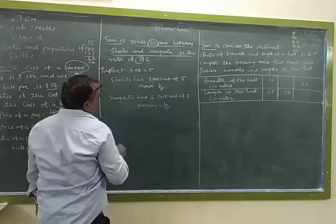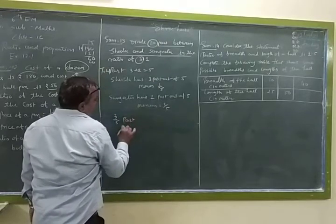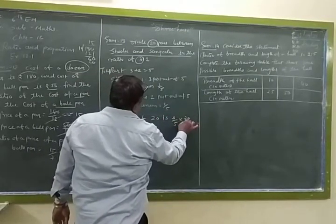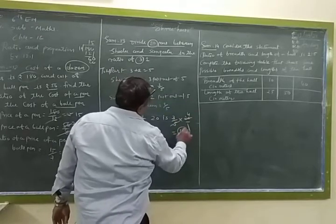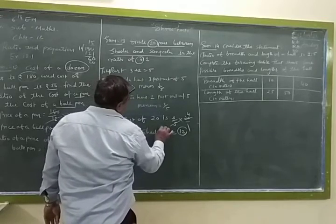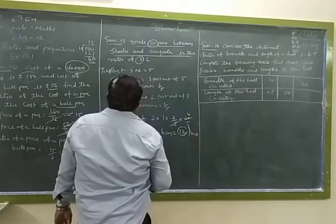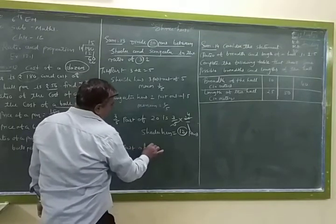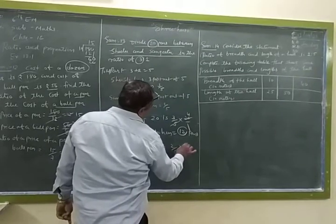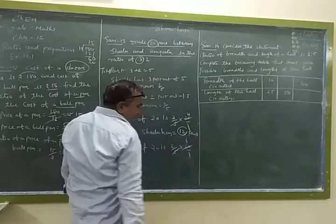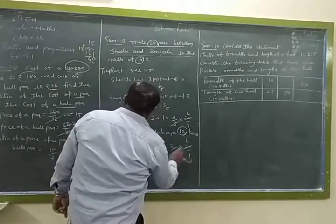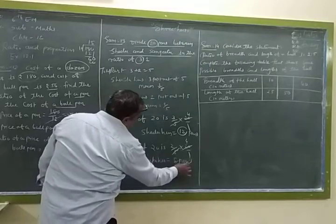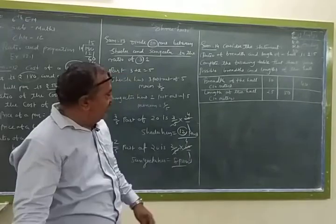Now, how many total pens? 20 pens. So 3 upon 5 part of 20 is equal to 3 upon 5 into 20. 5 fours are 20. 3 fours are 12. So Sheela has 12 pens. Now, 2 upon 5 part of 20 is 2 upon 5 into 20. 5 fours are 20. 2 fours are 8 pens. Sangeeta has 8 pens and Sheela has 12 pens.